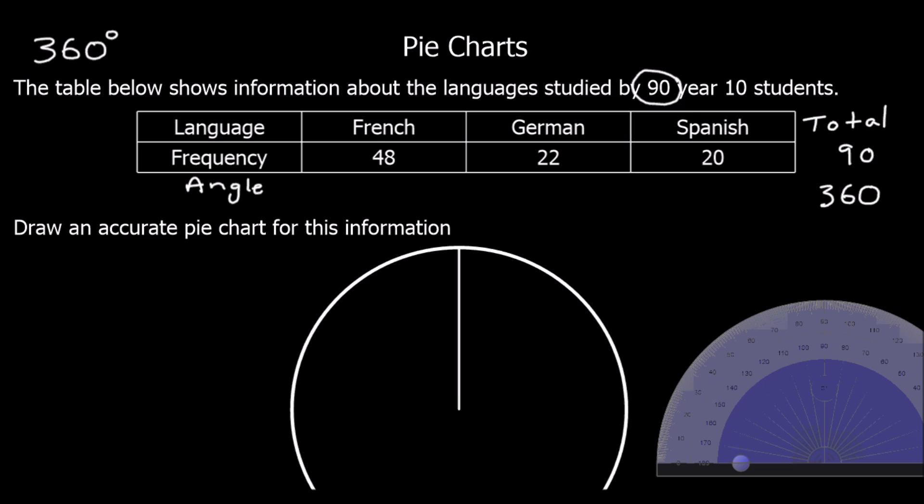So what we do is we work out a multiplier. How can we go from the frequencies to the angles? We've got 90 in total and the angles 360 in total. So we're working out a multiplier. What do you multiply 90 by to get 360? How many 90s make 360? That's four. So we've got a multiplier of four. To go from frequencies to angles, we are going to times by four.